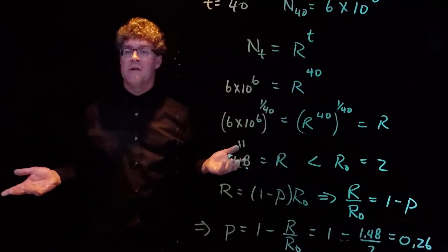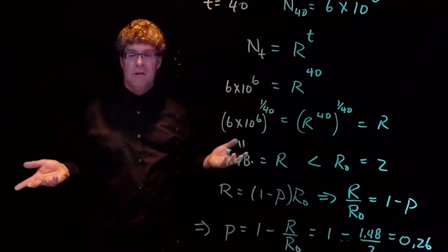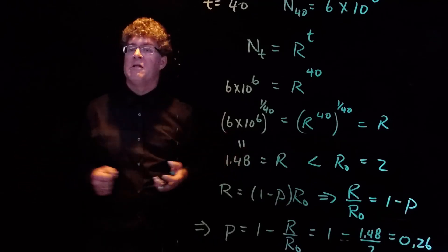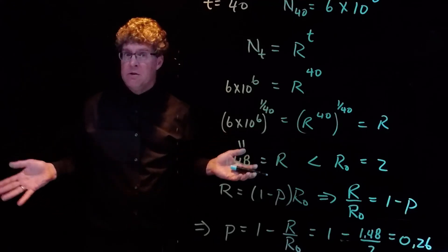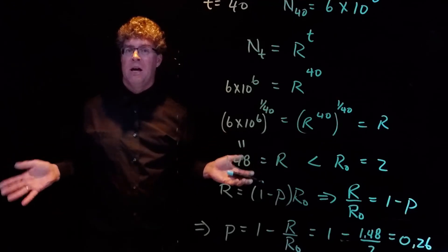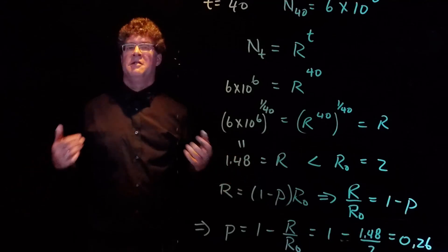So there has been some social distancing, not enough to stop the disease, but enough to slow its spread. And worldwide, it's been equivalent to reducing the number of contacts by about 26%. It's a good start, but we need to do more.